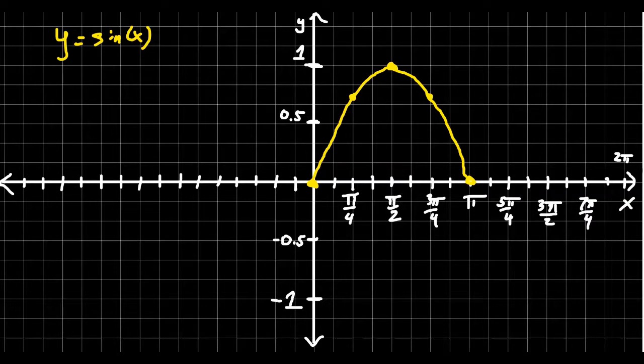And then if we continue on, at x equals 5π/4, sine is actually going to be negative √2/2, about negative 0.7 in that situation. So we get a point about right here.